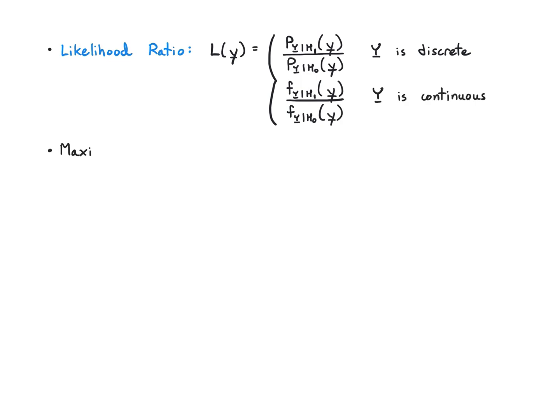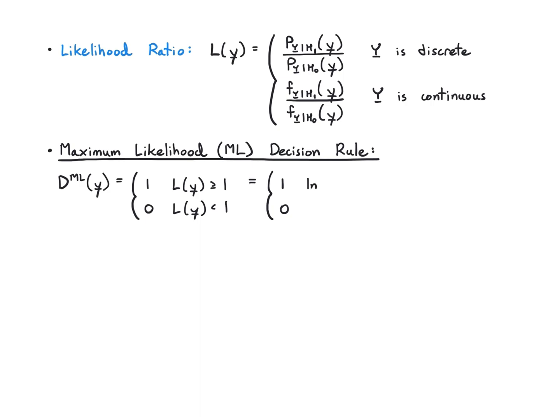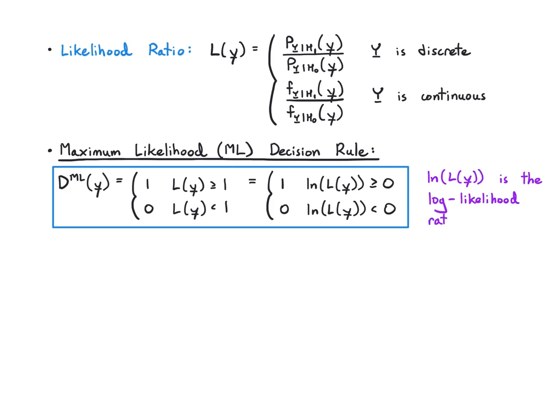We're going to get the same maximum likelihood or ML decision rule that we had with the likelihood ratio in the previous video. Except now instead of L of a scalar I have L of a vector, but otherwise everything is the same. I compare to 1 as the threshold or 0 if I'm working with the log likelihood ratio which is sometimes more convenient.